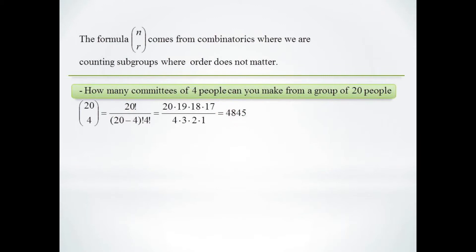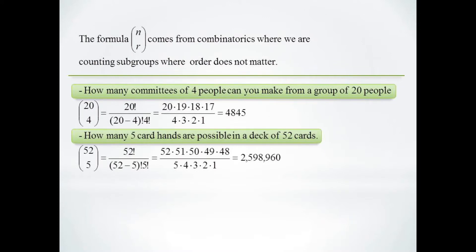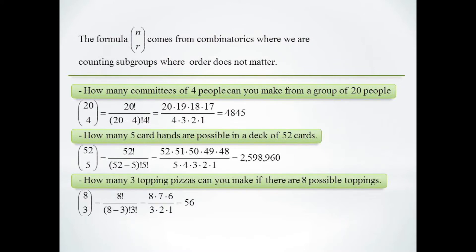For instance, the number of four person committees we can make from a group of 20 people would be 20 choose 4. The number of possible 5 card poker hands from a standard deck would be 52 choose 5. And the number of 3 topping pizzas you can make given 8 possible toppings would be 8 choose 3.